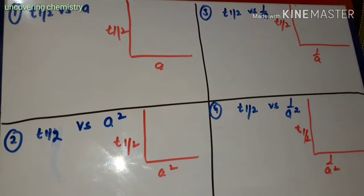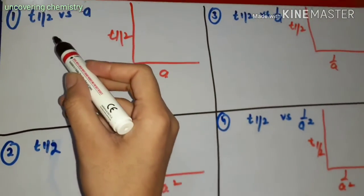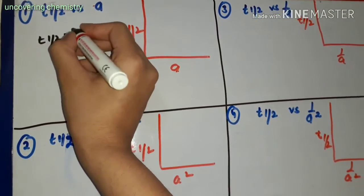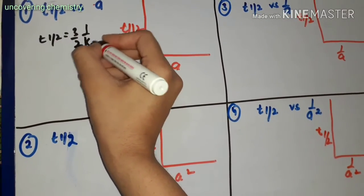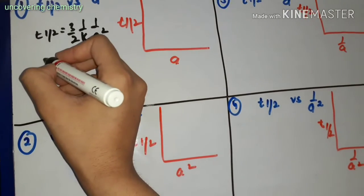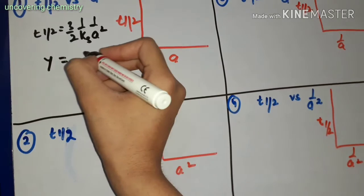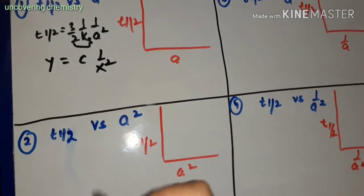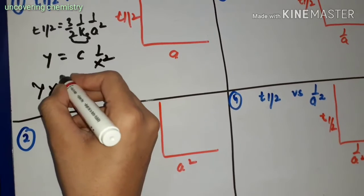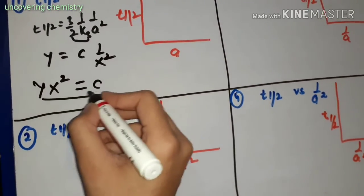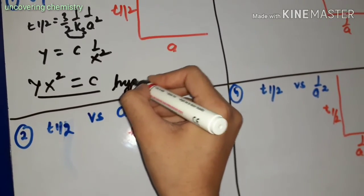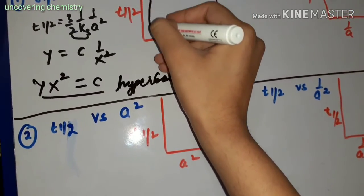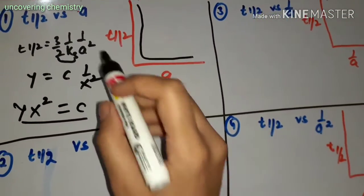The next graph for the third order reaction is T-half versus A. The equation is T-half equals (3/2) times (1 upon K3) times (1 upon A squared). This is the graph for a hyperbola with even powers, of the form Y equals C times 1 upon X squared. Since the power is even, the graph is sharply decreasing.